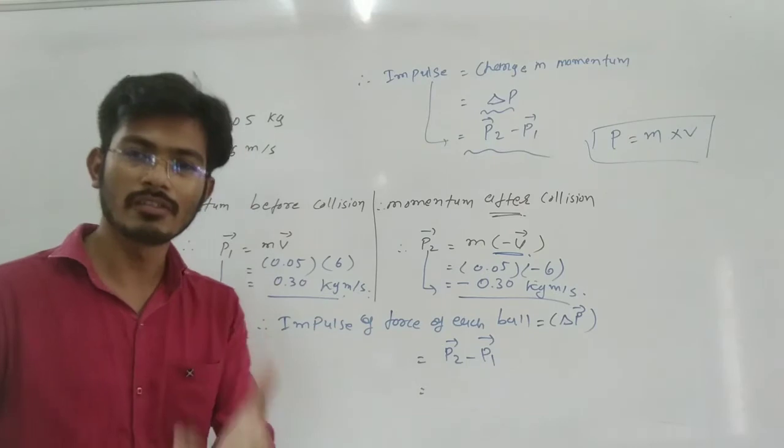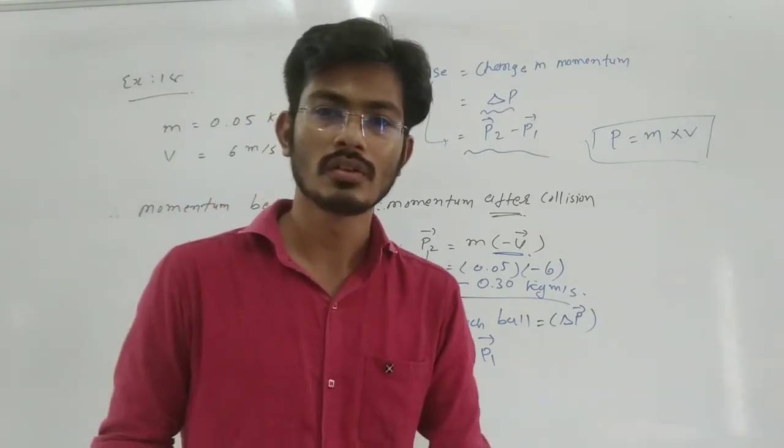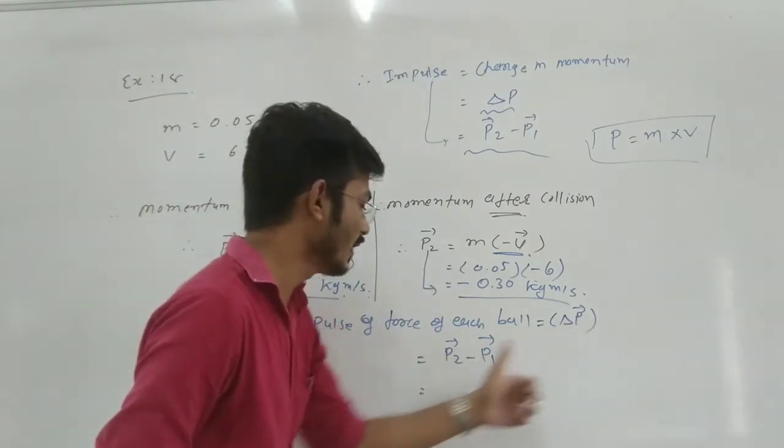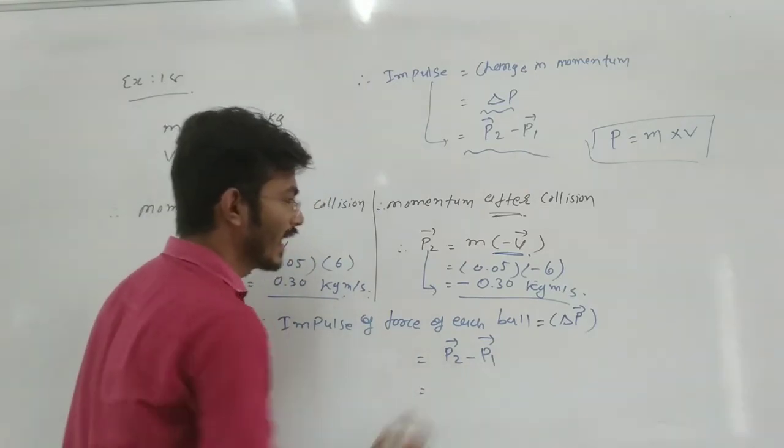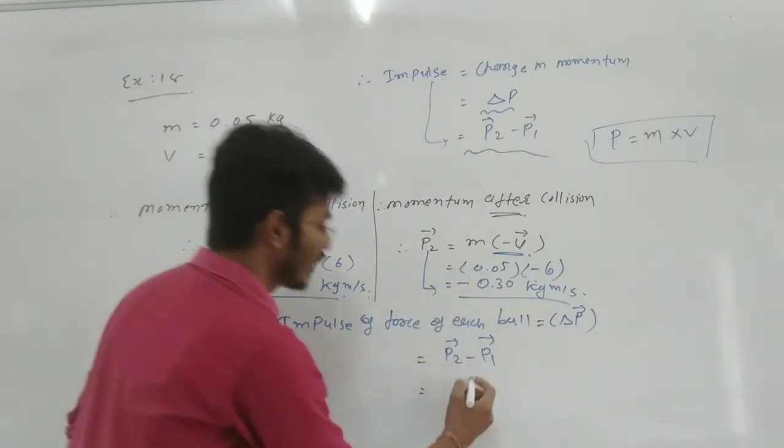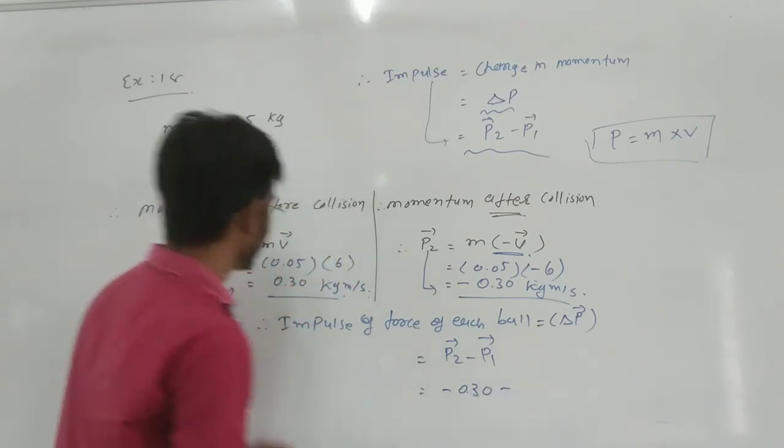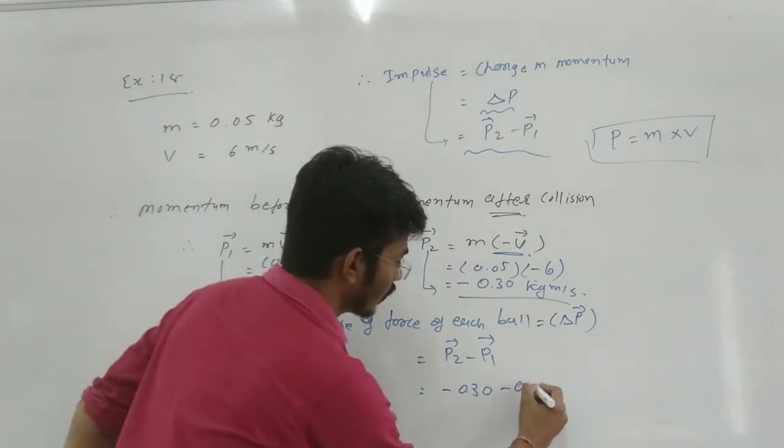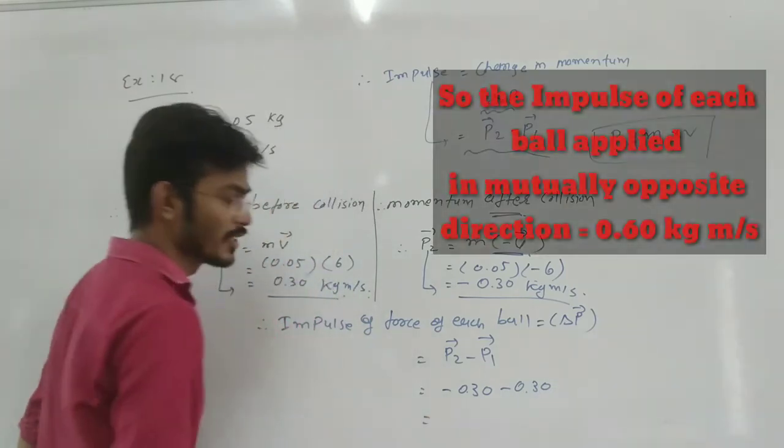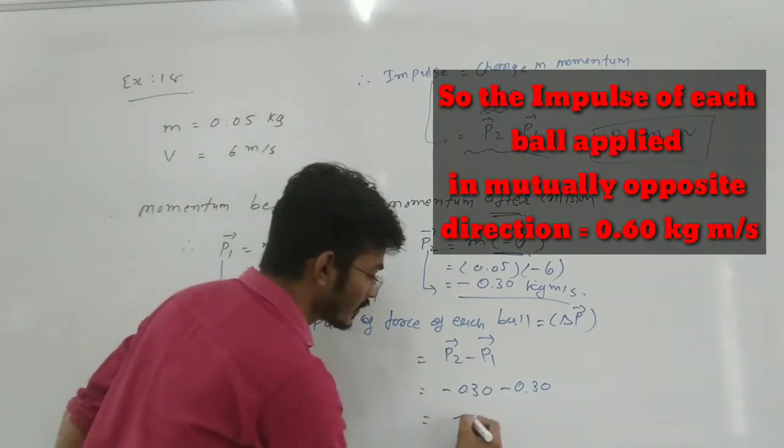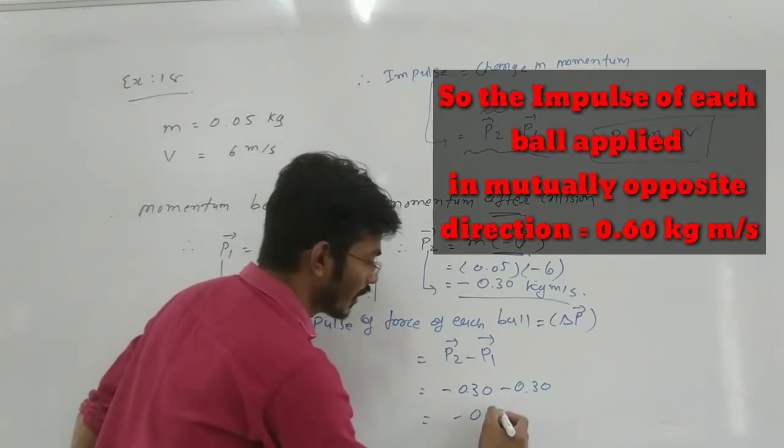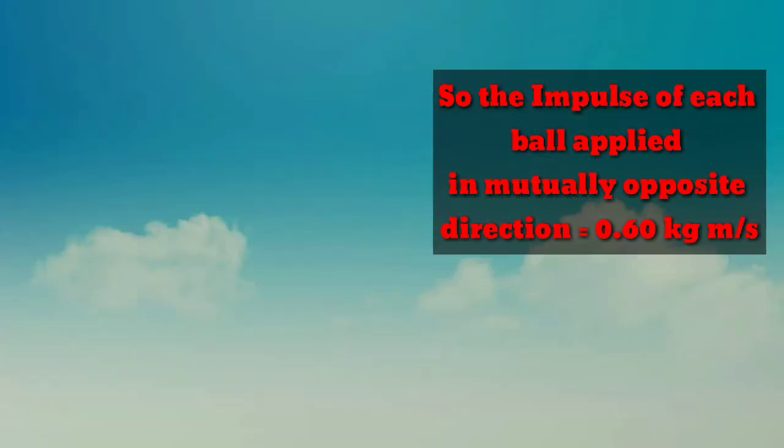So we have to find out the impulsive force. What will happen? Delta p. Delta p is equal to p2 minus p1. So p2 is equal to minus 0.30, p1 is equal to 0.30. So minus minus, what is the answer? This is minus 0.60.